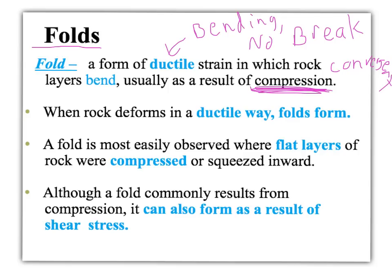At convergent boundaries, where the plates are being squished together and colliding, this generally results in compression stress, which can lead rocks to fold. Like if you started pushing the ends of two sides of your paper together, you would see that paper fold — either folding up or folding down in the middle. In a fold, what we normally see are flat layers of rock called strata.